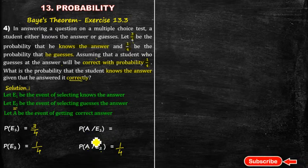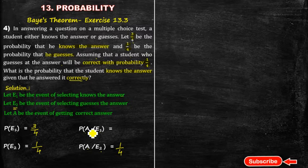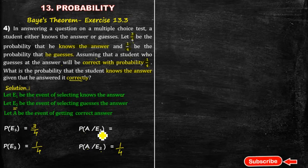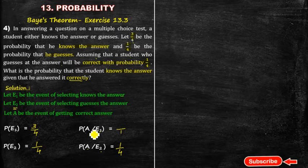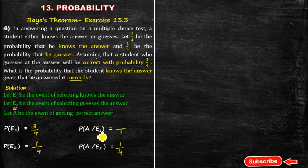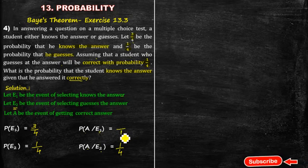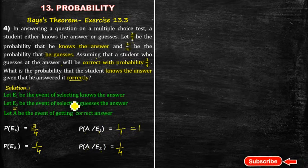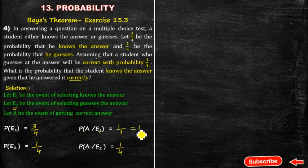Probability of A given E1: E1 means the student knows the answer. If the student already knows the answer, then in a multiple choice question with 4 options, the correct answer is certain. So probability of A given E1 equals 1 divided by 1, which equals 1.